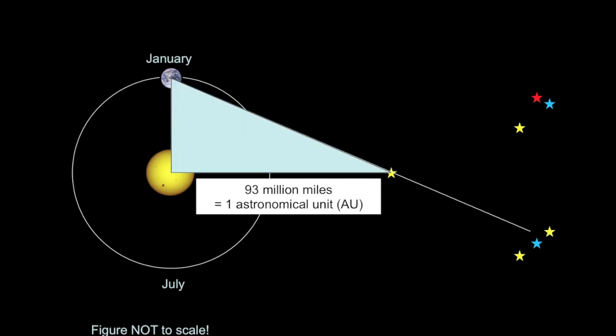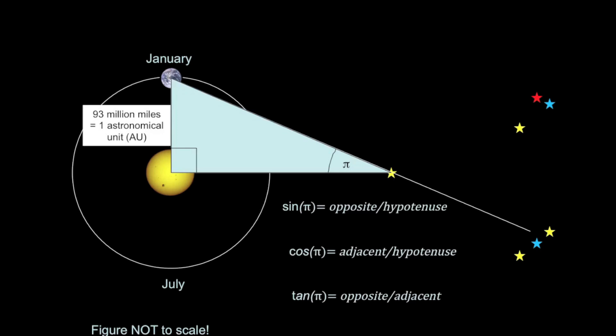And so in this triangle, we know that it is a right triangle, that there is a 90 degree angle between the Earth, the Sun, and the nearby star. I'll denote that with a little box. And then I'll place the value that I know for one side of the triangle on the triangle, the 93 million miles, or 1 AU.